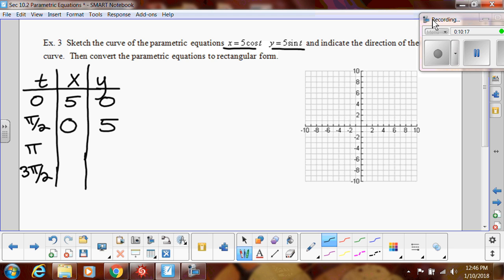And then for pi, the only difference there is that cosine of pi will be negative one. So this will be negative five, comma, zero. And then if I switch that to be three pi over two, that'll be zero and then negative five. So when I'm graphing this, I have those points. If you wanted to, you could do more.